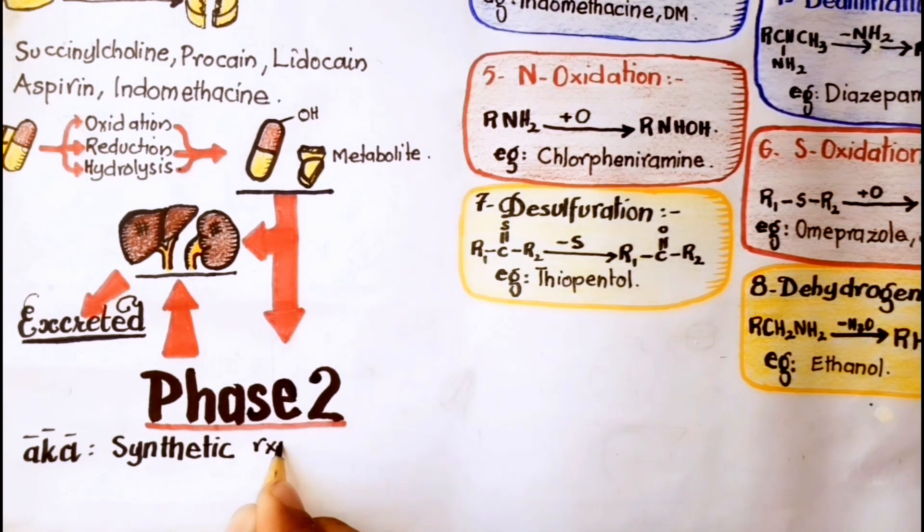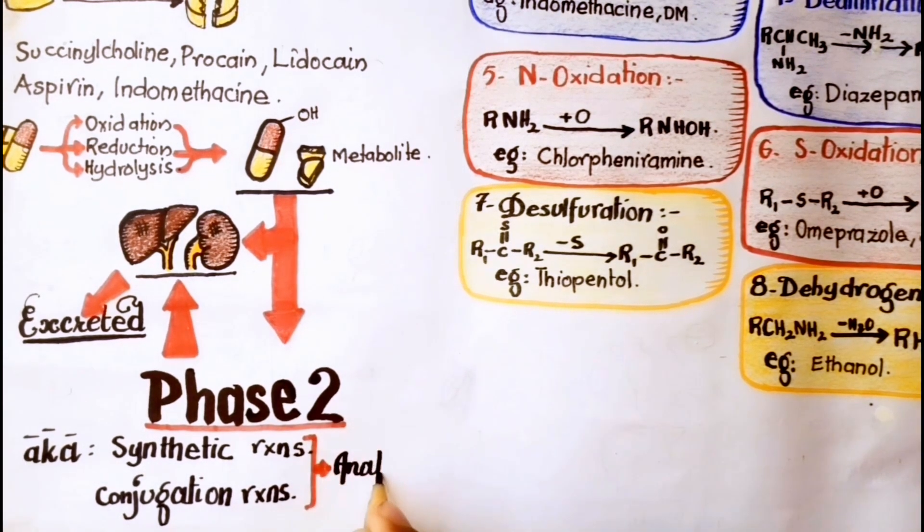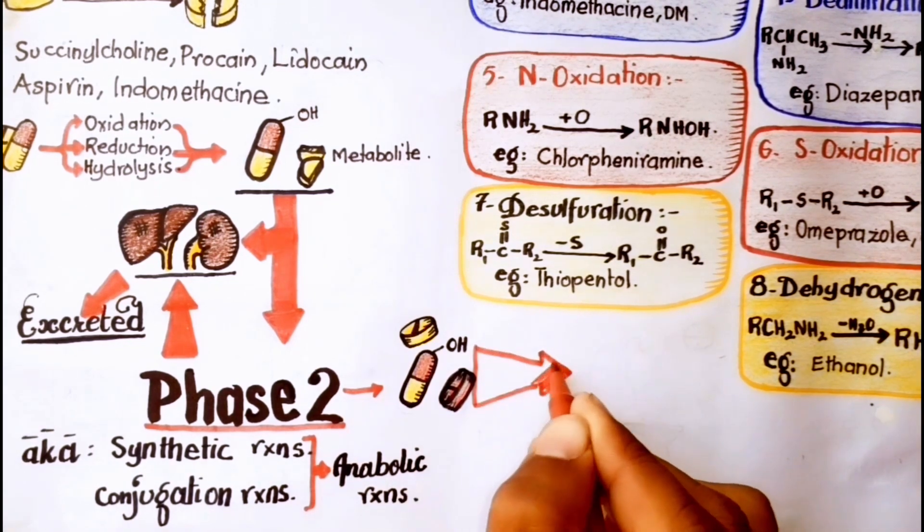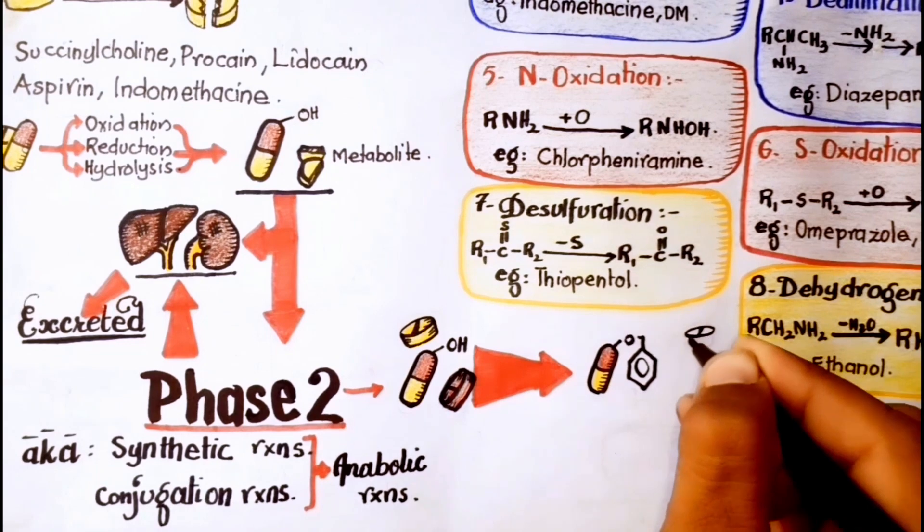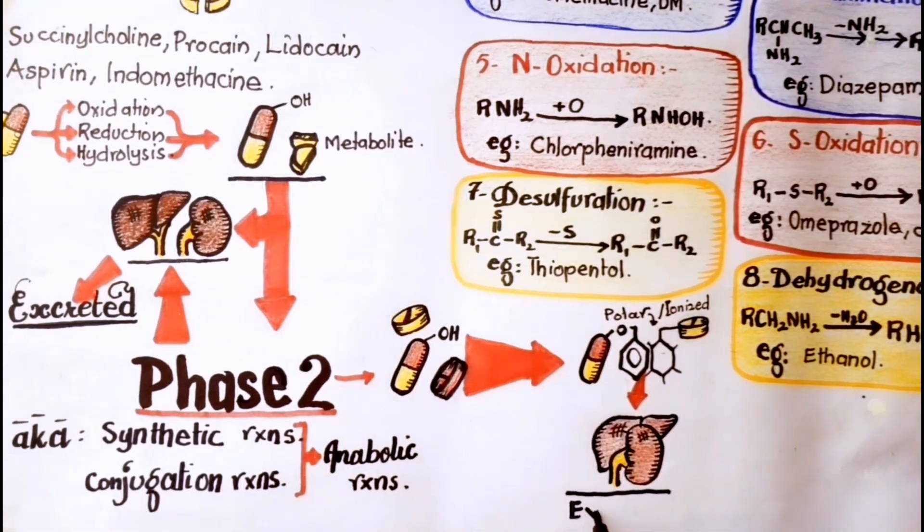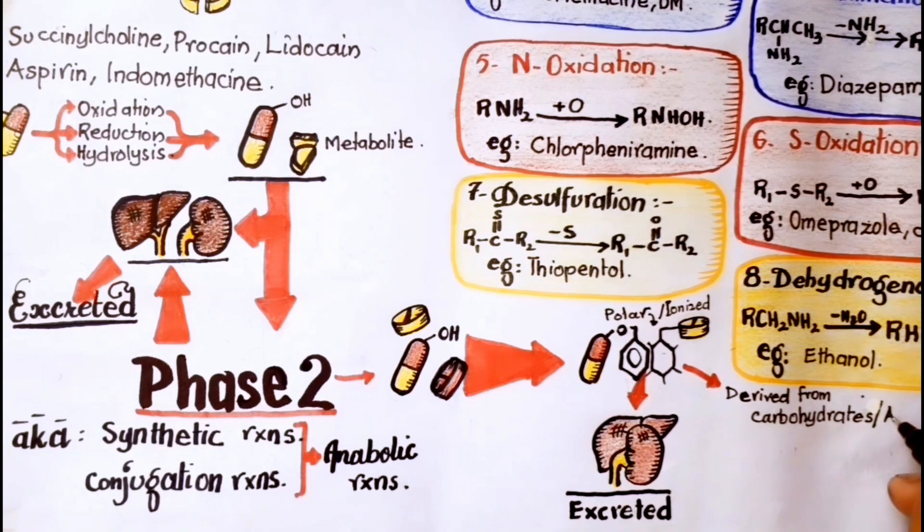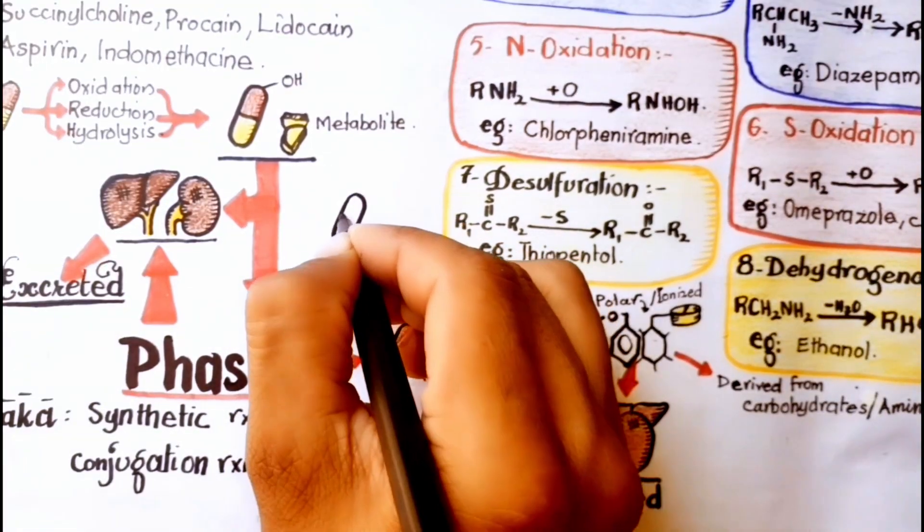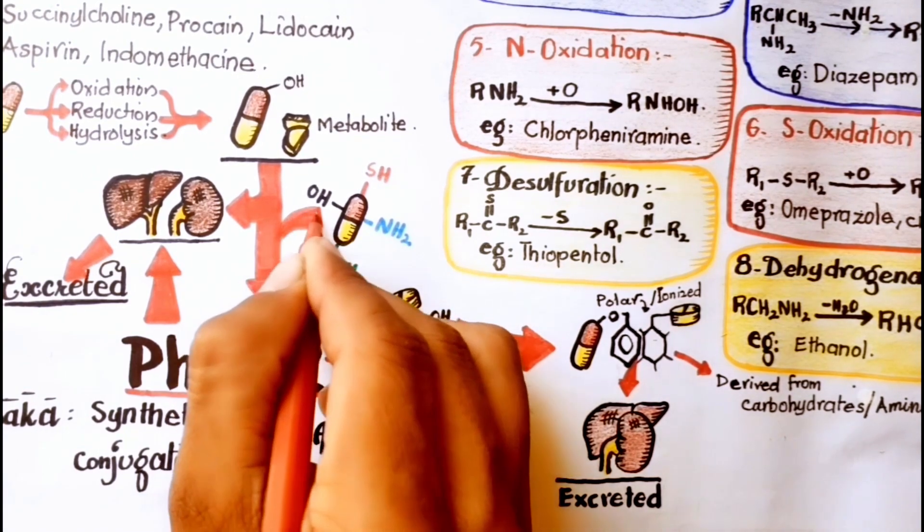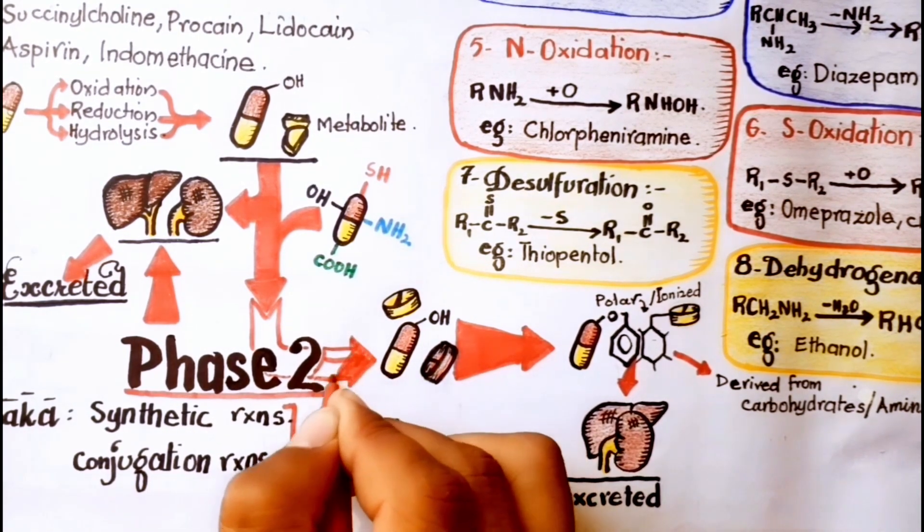Phase 2 reactions are also known as synthetic or conjugation reactions. Phase 2 reactions are anabolic reactions in which an endogenous chemical conjugated, means covalently attached to the drug or its phase 1 metabolite, to form a polar, highly ionized organic acid which is easily excreted in urine or bile. Drugs already possessing a hydroxyl, sulfhydryl, amino, or carboxylic acid group may enter phase 2 directly without prior phase 1 metabolism.